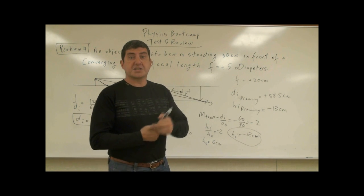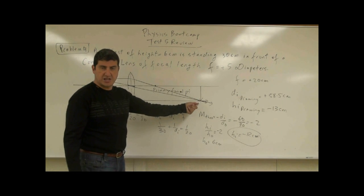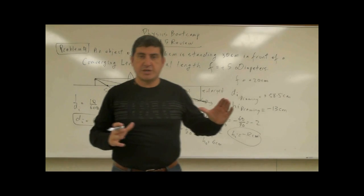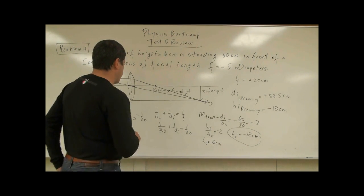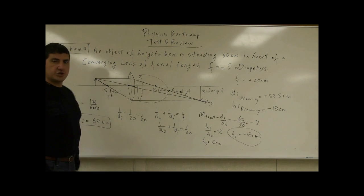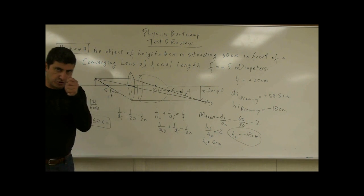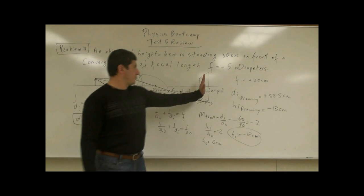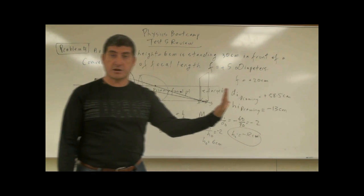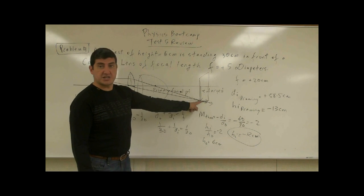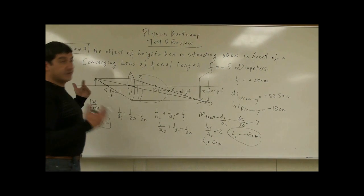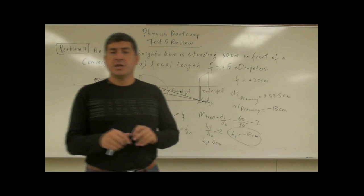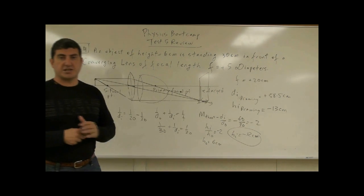What are the properties of the image? It's going to be inverted, it's going to be a real image — real because the rays actually intersect there — and it's enlarged, or magnified. How can you see this image? You could put your eye there and see an enlarged image, so it acts like a magnifying lens. The other way is to put a screen there — you see the image projected onto the screen. Real images can be projected on a screen; virtual images can only be seen by placing your eye there, and the image appears on the same side as the object.